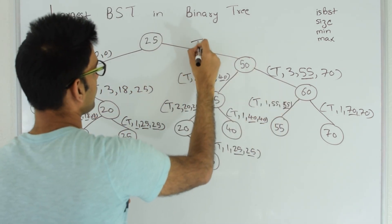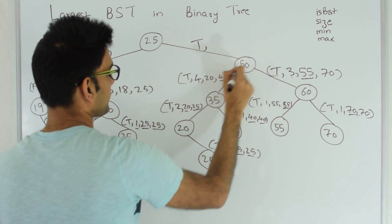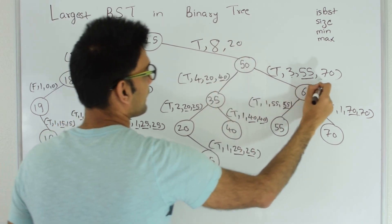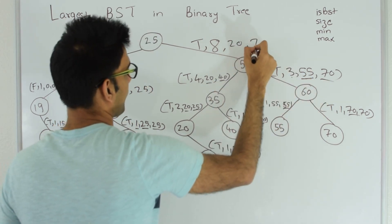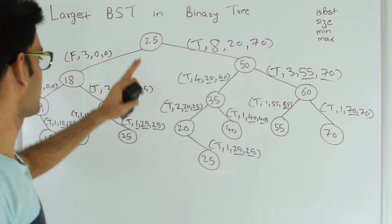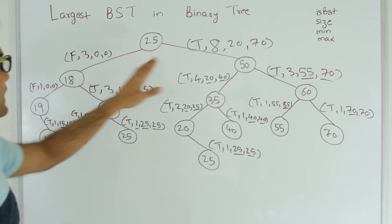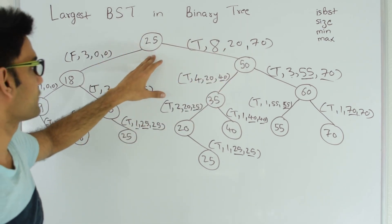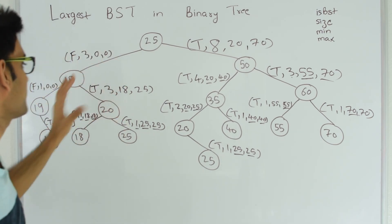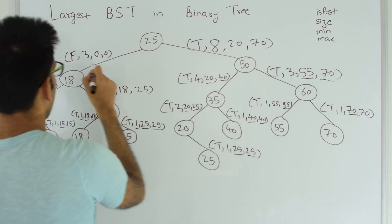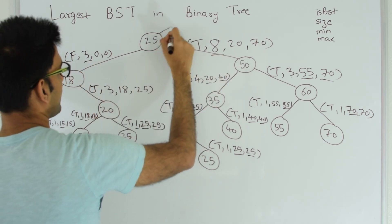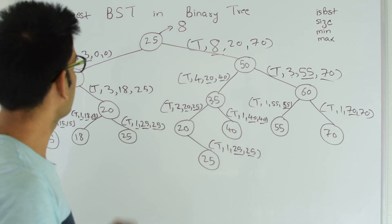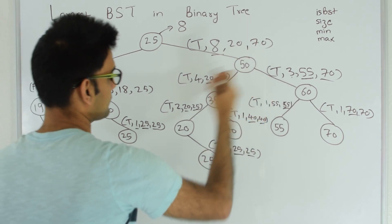Node 50 returns to 25: true, size 8 (3+4+1), minimum 20, maximum 70. Root node 25 gets false from the left side and true from the right side. So the tree with 25 as root cannot be a BST because one side is not a BST. All it does is return the maximum size found, which is 8. So 8 is returned to the calling function — 8 is the size of the largest binary search tree in this binary tree.